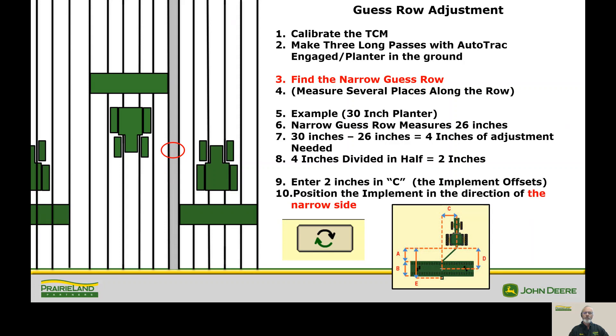And we're going to do that in letter C of the implement offsets. Now the next question that always comes up, which side of the planter do we move the circular arrow? Always put the planter toward the narrow side. If you measure the narrow side and put the planter toward the narrow side, it's going to work. This is one of those things that doesn't really make sense, but just do it that way and it will work instead of spending half a day trying to get your guess row set correctly.